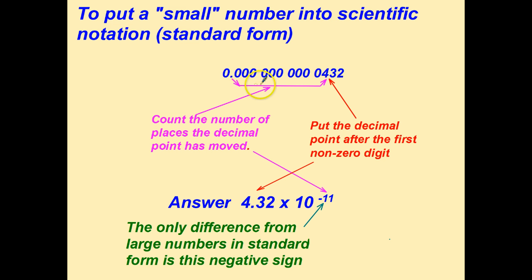Count how many places you move the decimal point. In this case it's going to be 11 places, so therefore 4.32 times 10 to the negative 11, because we move the decimal point back to the right it has to be a negative index.